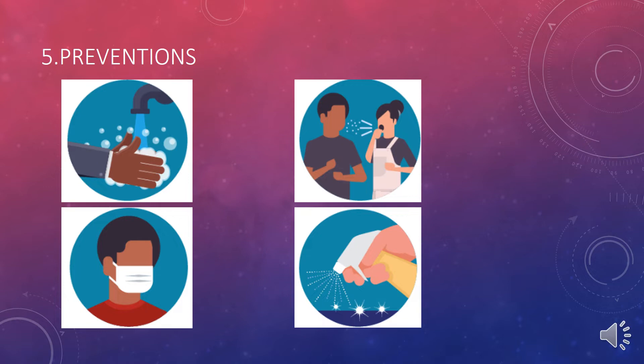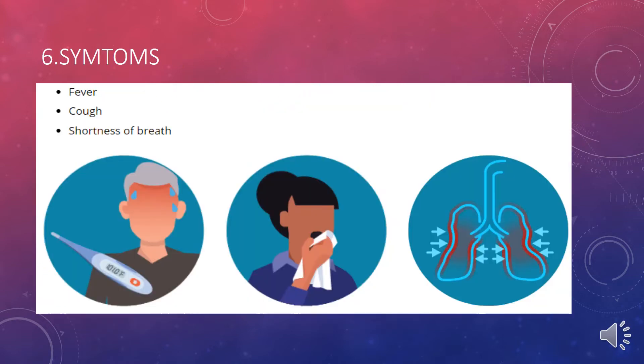Fourth, disinfect the surfaces you touch most — like doorknobs, tables, and laptops. These should be sanitized with a solution containing at least 70% alcohol. One good example is Sterillium, a solution from a German company. We use it in our hospital settings and it has given excellent results.